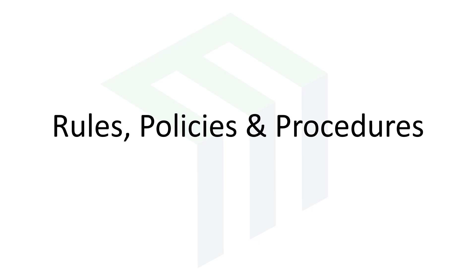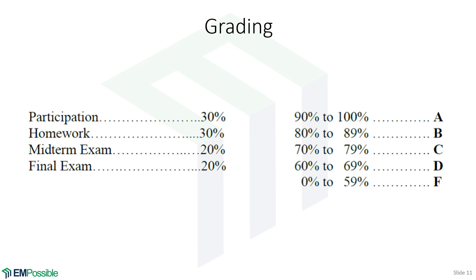Now on to the boring stuff — the rules, policies, and procedures, but bear with me because this is important. First is the grading. Participation is 30%, a pretty high percentage, because this is largely a discussion course — I'll be looking at your willingness to ask questions, participate in discussions, and respond to polls. Homework is also 30%, where you'll practice writing, presentations, creating graphics, and writing your research proposal. We'll have a midterm exam and a final exam. The midterm will be writing a journal letters article — shorter, about two pages. The final exam is writing a draft of your research proposal. The grading scale is typical: 90–100 is an A, 80–89 is a B, and so on.